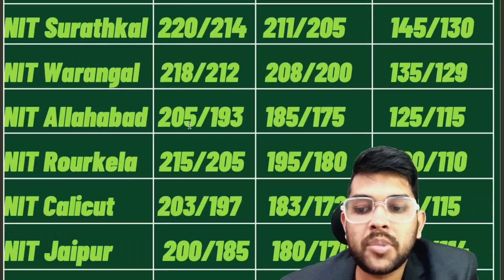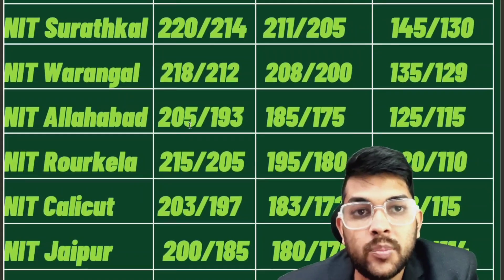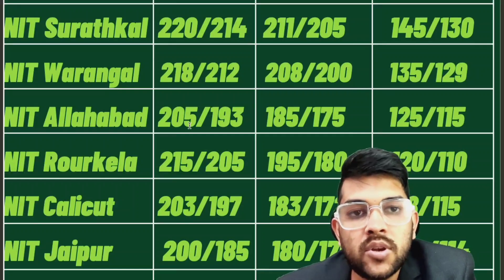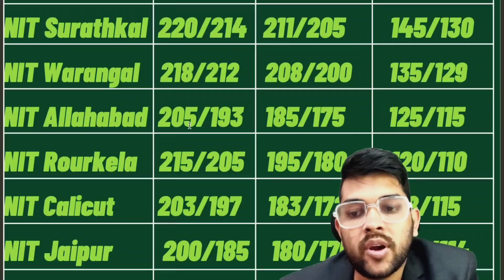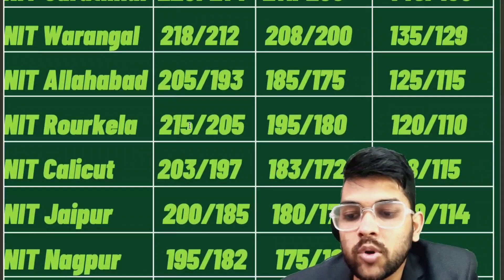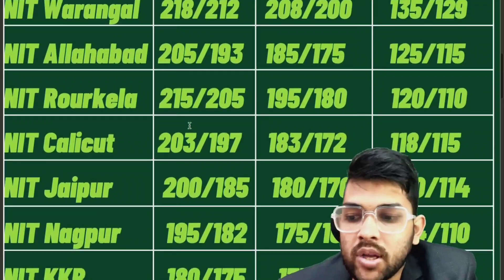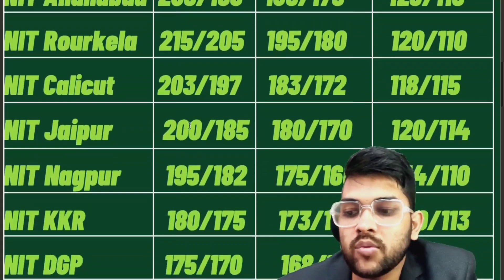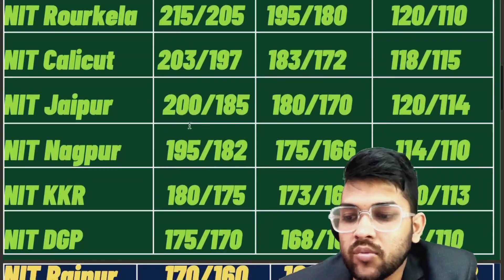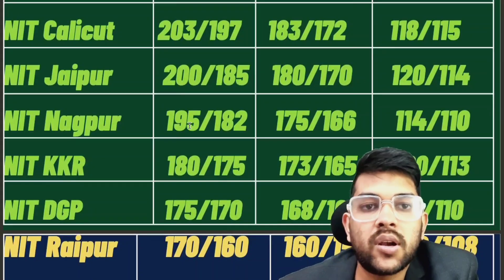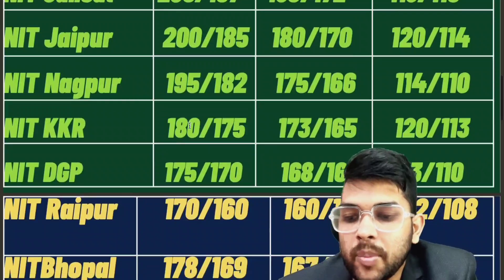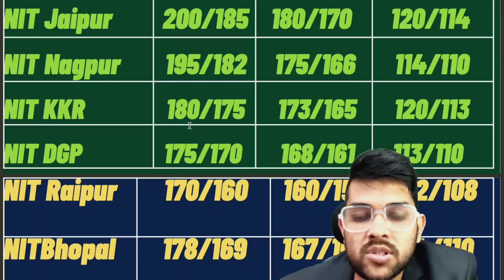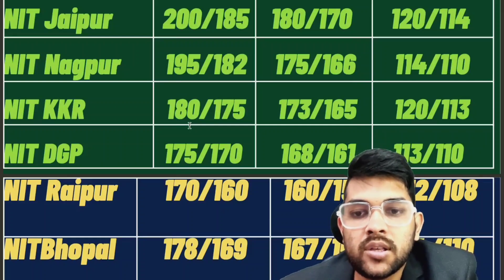For NIT Jaipur, 200 and 180 for CSC, and 120 marks for the lowest branch — male marks are listed before the slash and female after. These are for a moderate paper; if the paper is harder or easier the marks will change accordingly, and these are for first attempt only. For NIT Nagpur, 195 and 175, lowest 140. For NIT Kruchitra, 180 and 173, lowest 120. For NIT Durgapur, 175 and 168, lowest 130. For NIT Raipur, 170 and 160, lowest 112. For NIT Gopal, 178 and 167, lowest 140. 'Lowest' means the lowest possible branch available in that college.